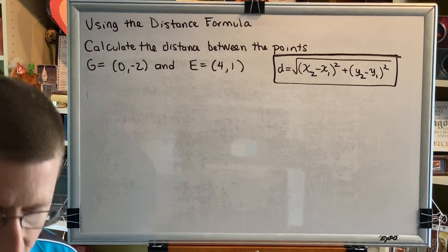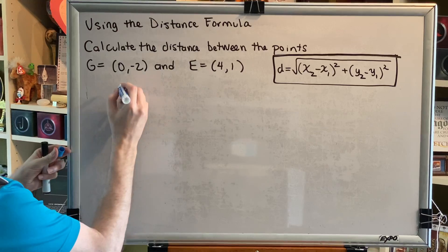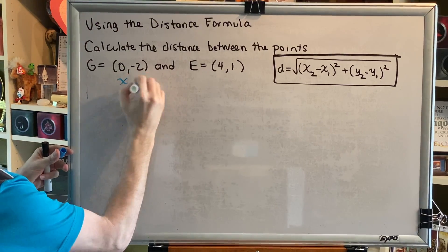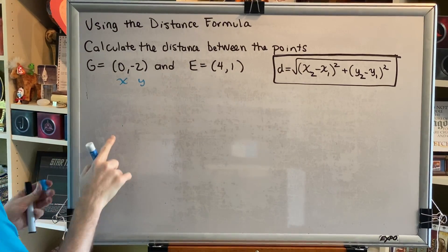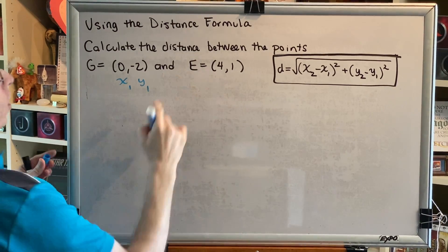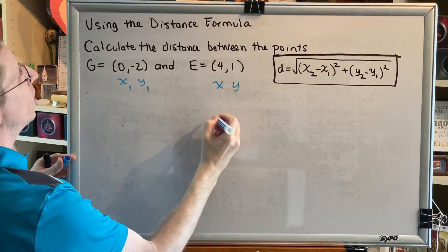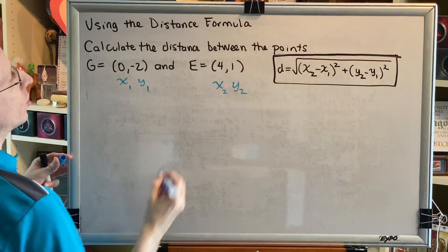Okay, so the first step to solving a problem like this is to label the coordinates. We're going to call G point 1, and of course every point has an x and a y, so this must be x₁ and y₁. We're going to call E point 2. Of course it also has an x and a y, so we're going to call this x₂ and y₂.